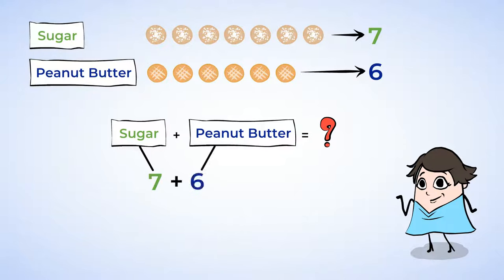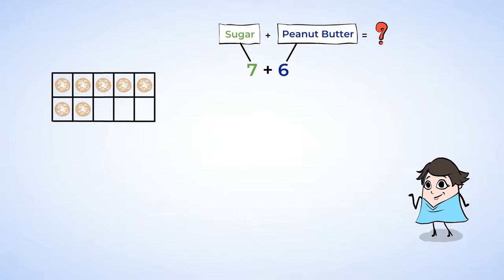So you need to add 7 plus 6 and you will use your 10-frame as the fastest way to do the calculation mentally. With 7 sugar cookies, you have 7 ones. You also know that to make a 10, you are going to need 3 more ones.